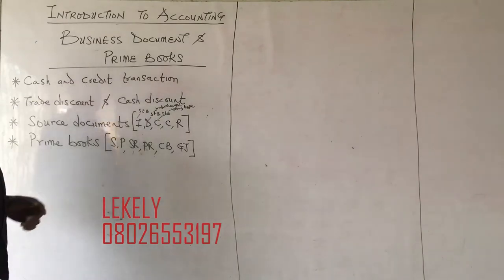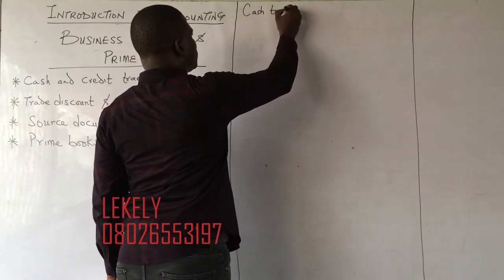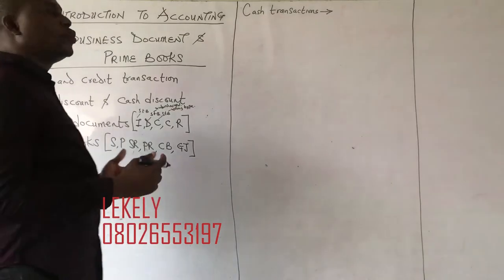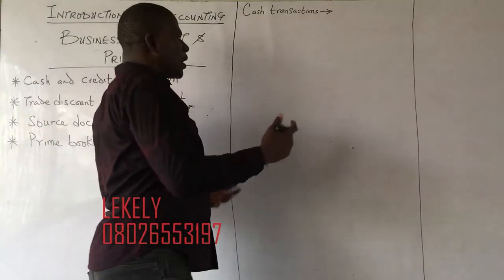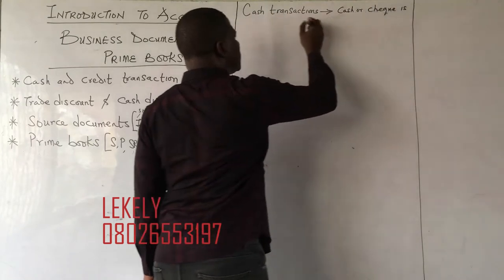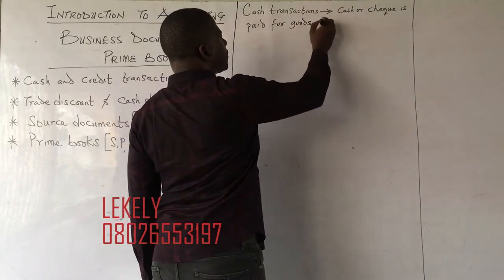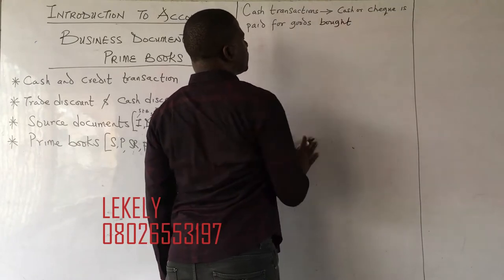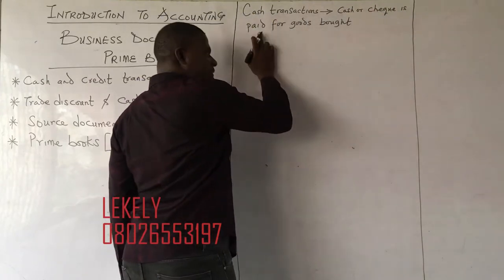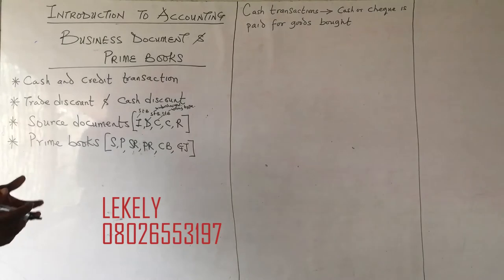When talking about cash and credit transactions: cash transactions are those where once goods are bought, cash or check is paid or received for goods bought and sold. That is, you sell an item and you get cash, or you buy an item and you pay cash.